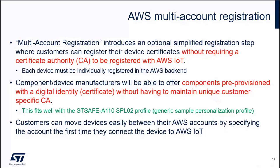The multi-account registration is only one of the possible options to connect to AWS. You can have just-in-time registration, just-in-time provisioning, or one-click X509 certificates. These methods won't be described today because they are not supported in our package. The novelty we bring is the support of multi-account registration, which introduces an optional simplified registration step where customers can register their device certificates without requiring a certificate authority to be registered with AWS IoT.